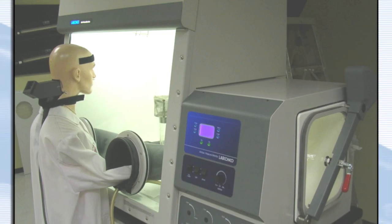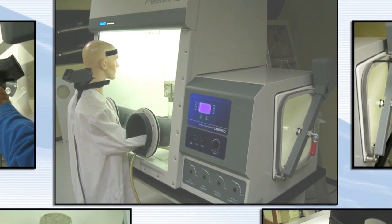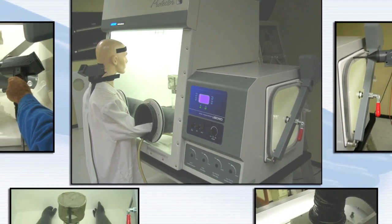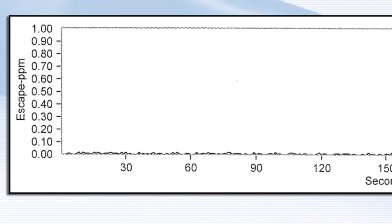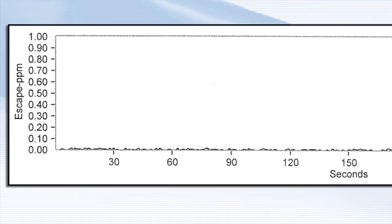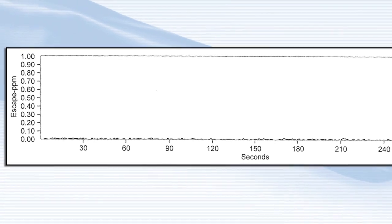These boxes have also been tracer gas tested, indicating fast cleanup times from contaminated conditions. Tests measured less than 0.05 ppm average tracer gas levels during perimeter scan testing after 5-minute dilution times, surpassing ASHRAE 110 standards.